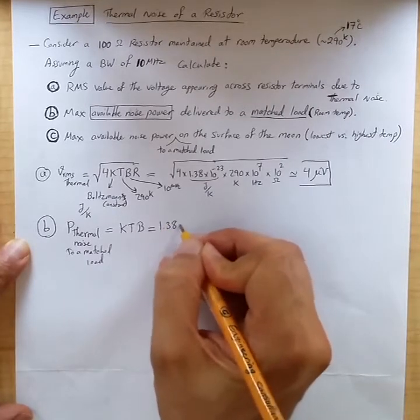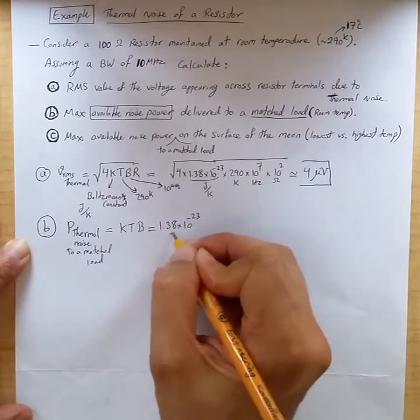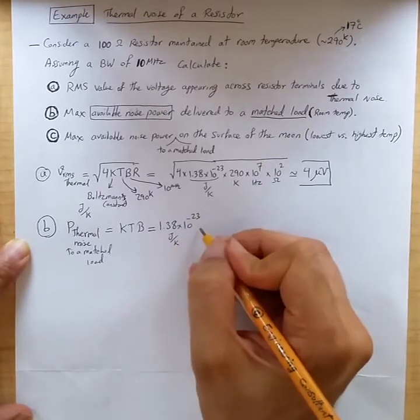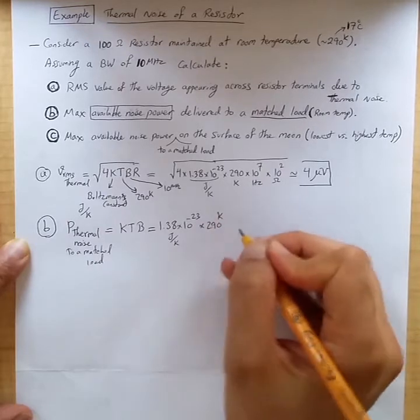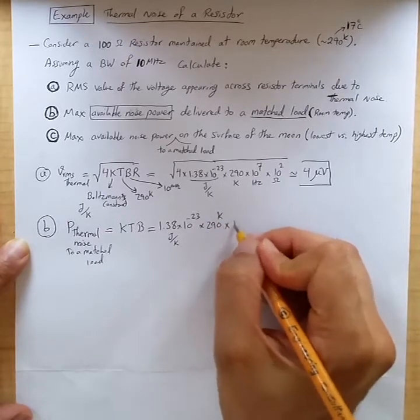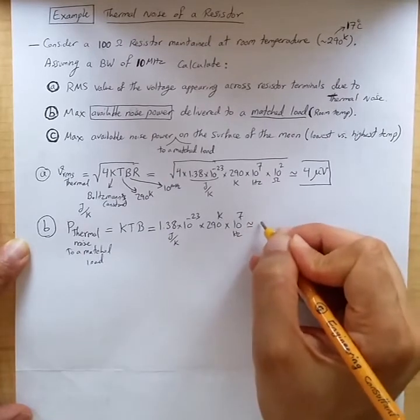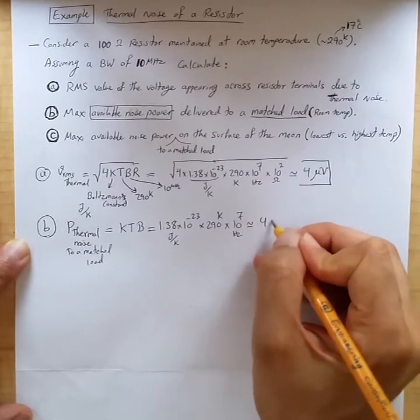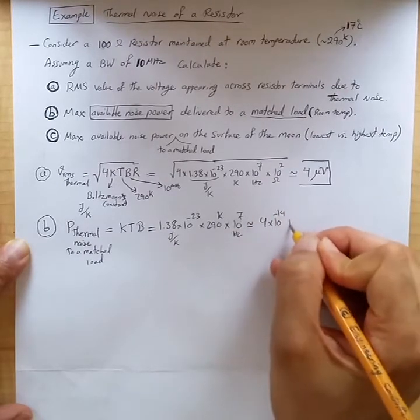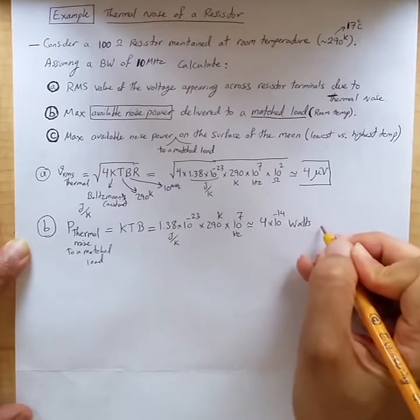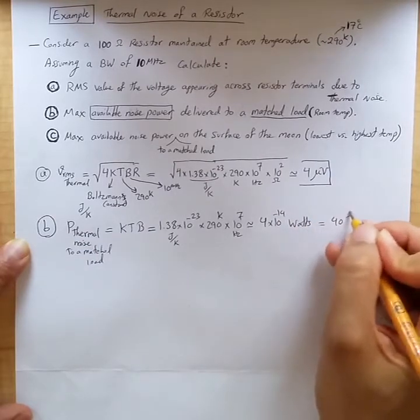So we have 1.38 times 10 to the minus 23 joules per Kelvin, times 290 Kelvin, that's room temperature, times 10 to the 7 hertz. And this is roughly 4 times 10 to the minus 14 watts, or 40 femtowatts.